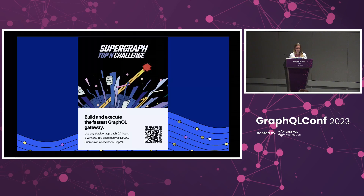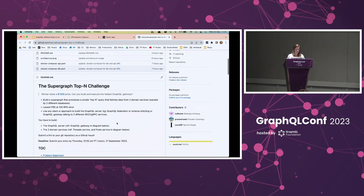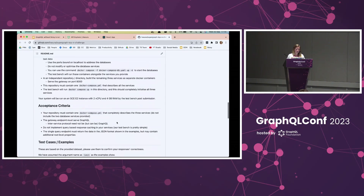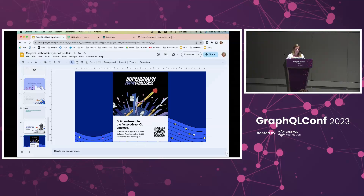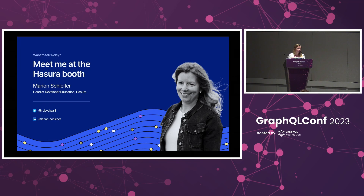We have a challenge called the SuperGraph Top End Challenge — it's about building and executing the fastest GraphQL gateway, basically building a supergraph. It started today at noon and finishes tomorrow at noon, so you have 24 hours. Top prize is $1,000, and runners up receive $500. Scan the QR code to reach the GitHub repository where the problem statement and goal are explained. I hope many supergraphs reach us and we can crown the winners tomorrow. Come to our booth to learn more, and if you want to talk about Relay, I'll be at the booth today and tomorrow. Thank you so much for joining me, and have a great rest of the conference.